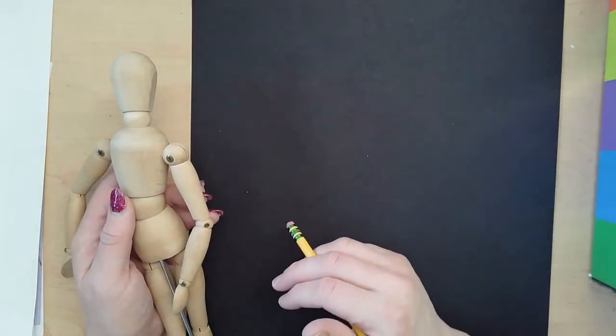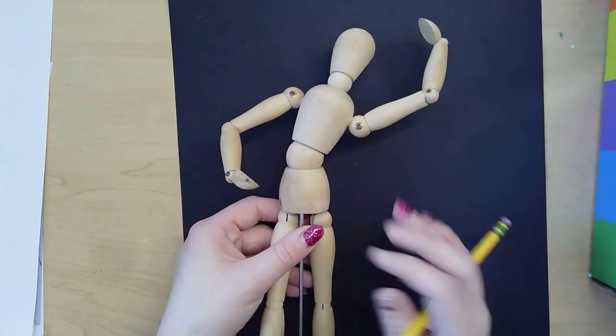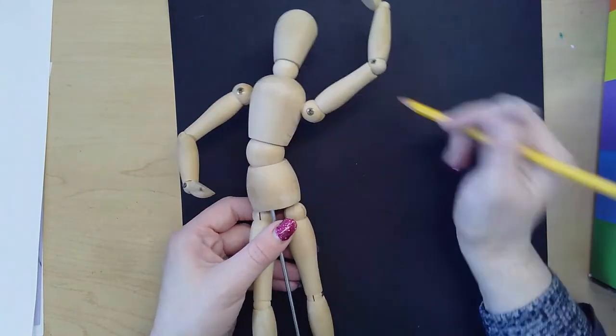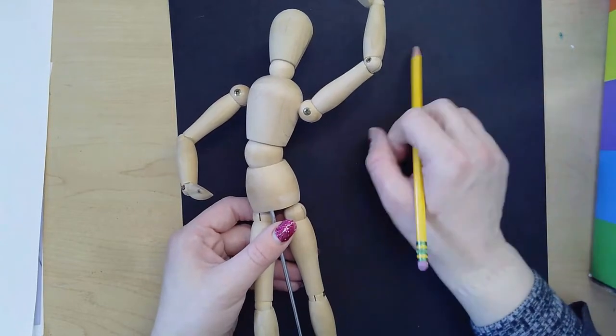Once you have your figure posed the way you want them, set them aside so you can look at them, and you're going to try to draw what you're seeing using pencil on your black paper.